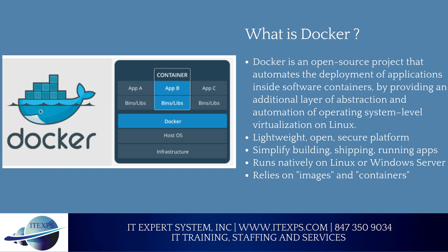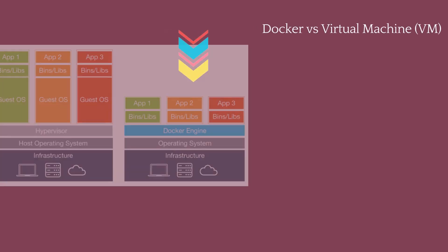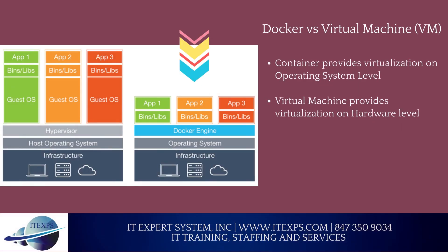Now let's compare Docker vs. Virtual Machine. A container provides virtualization on the operating system level. Containers do not need to include a full OS, so their footprint is lighter than a VM — they are faster to create, quick to start and stop, and do not take more resources. A virtual machine provides virtualization on the hardware level. It stores an OS in each VM instance; they are bulky, take more resources, take a long time to build, and take longer to start and stop.